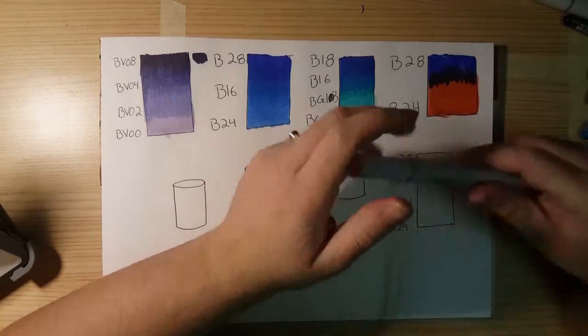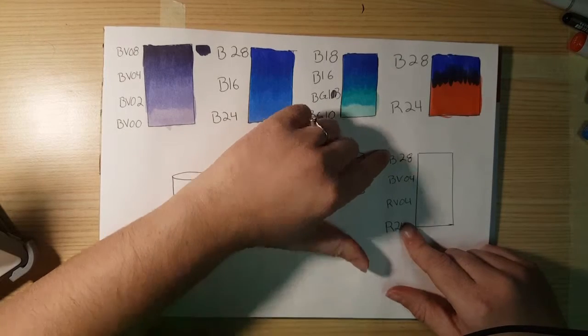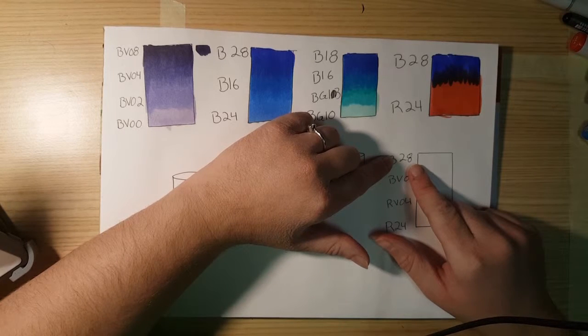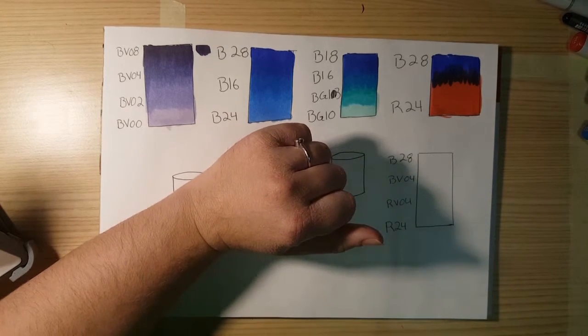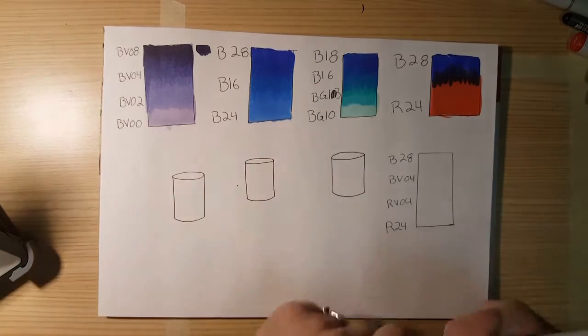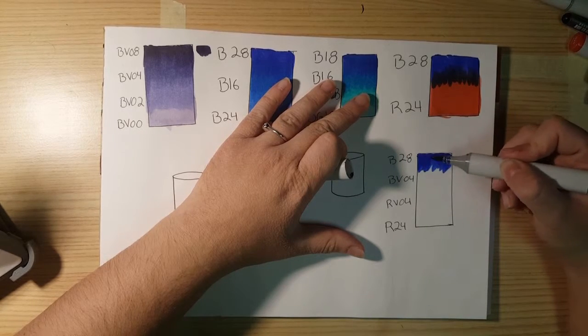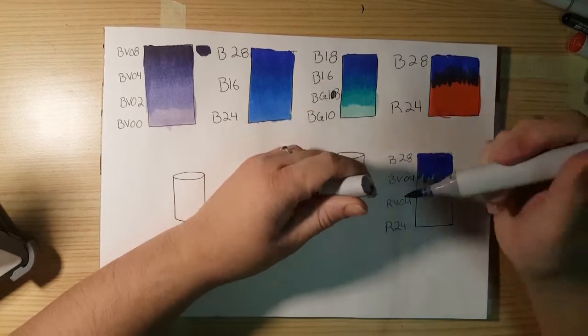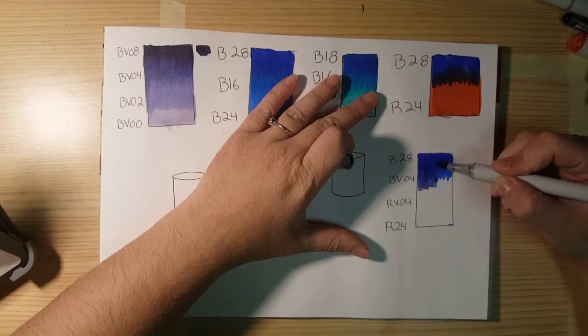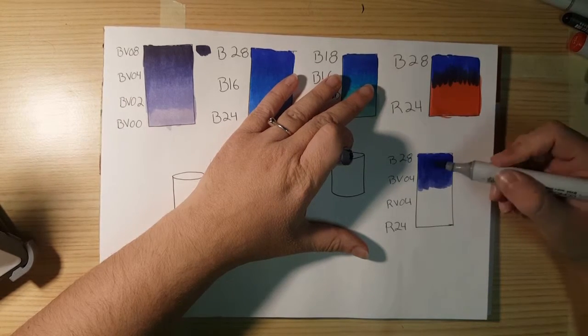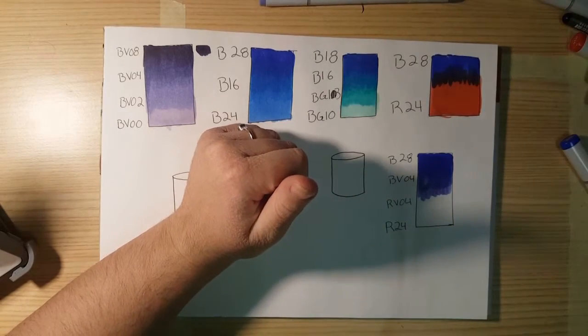So, one way to combat that, however, is by using colors that are similar to the two first colors and color family to blend in the middle. So, I have B28 here. And then I can move on to blue-violet 04. Then red-violet 04. And then I have red 24. So, we'll start with B28. Then we'll move on to blue-violet 04. So, you can see these two blend a little bit easier than the red and the blue did.